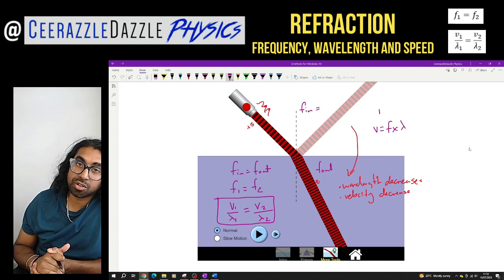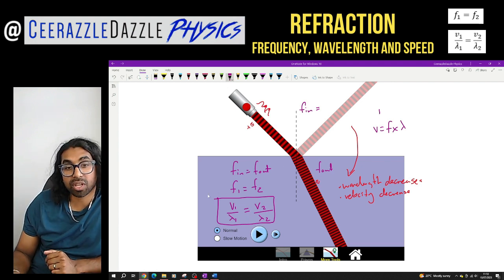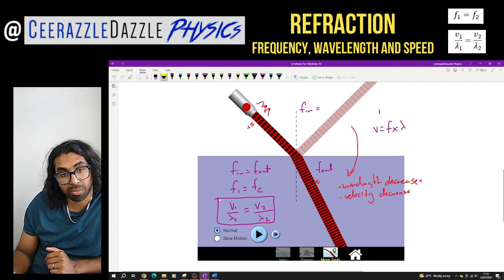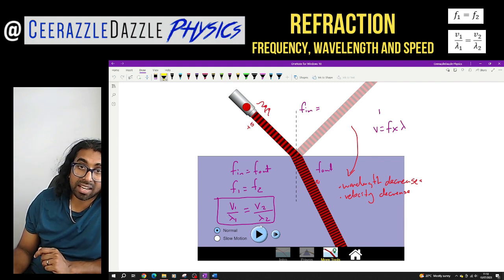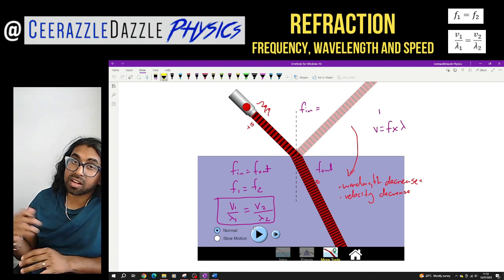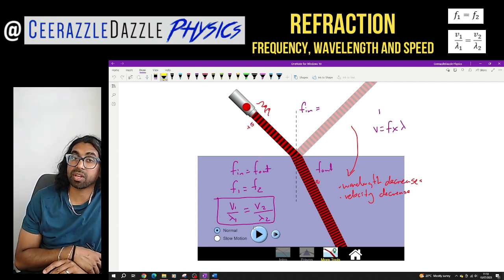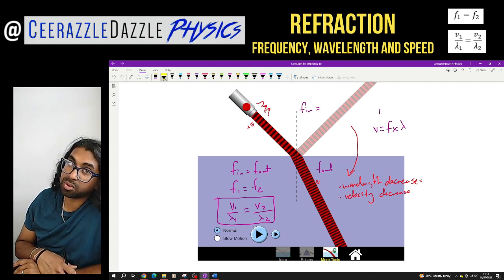And that's it for another session of Ceerazzle Dazzle Physics. Make sure that you're able to understand where this formula comes from: v1 over lambda 1 is equal to v2 over lambda 2 when you're tackling questions in refraction. And guys don't forget to like, subscribe to keep my channel going and share my content with as many kids as possible. Good luck!